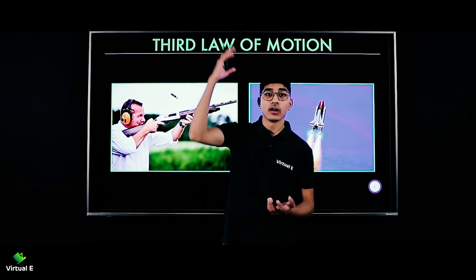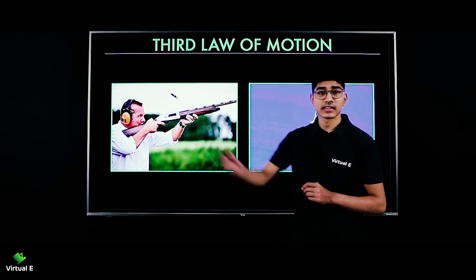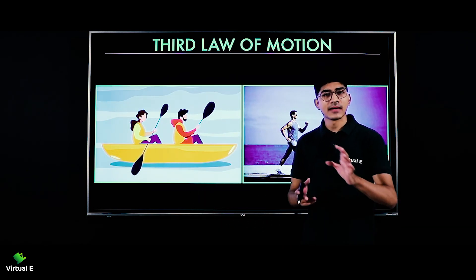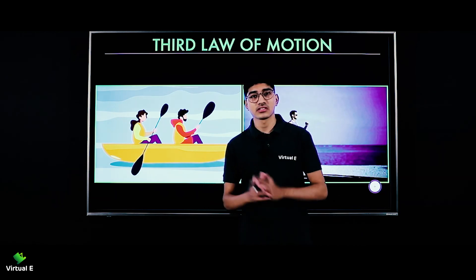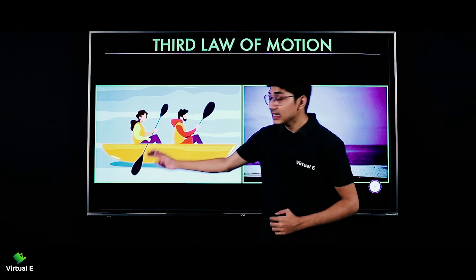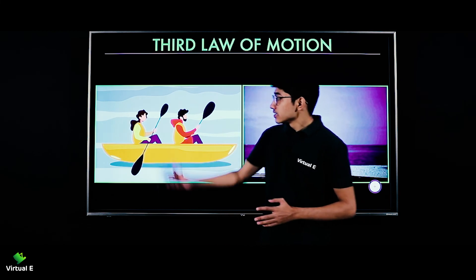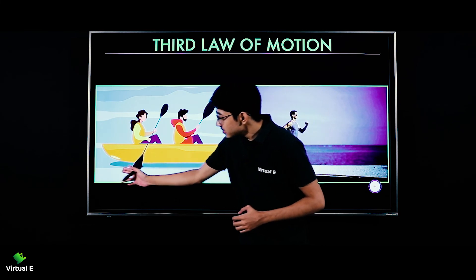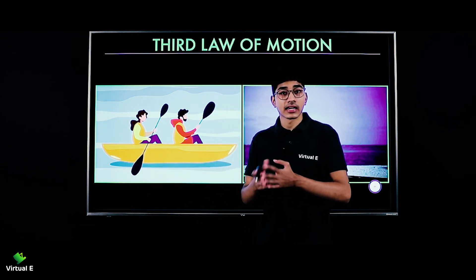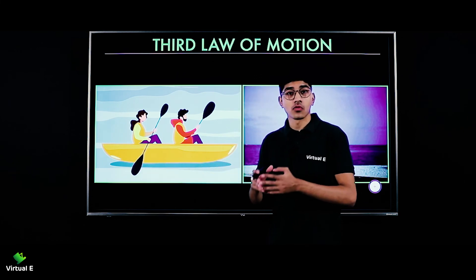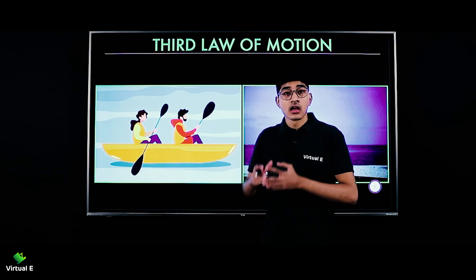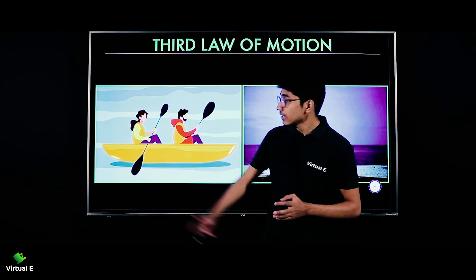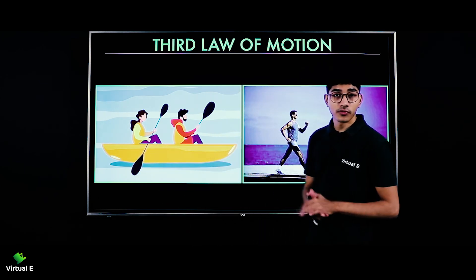We also have the example of rowing a boat — the same principle applies. We are able to move the boat because when we row backward, we apply a force on the water in the river. When we apply that force, the water also applies an equal and opposite force on us, which causes our boat to move forward.